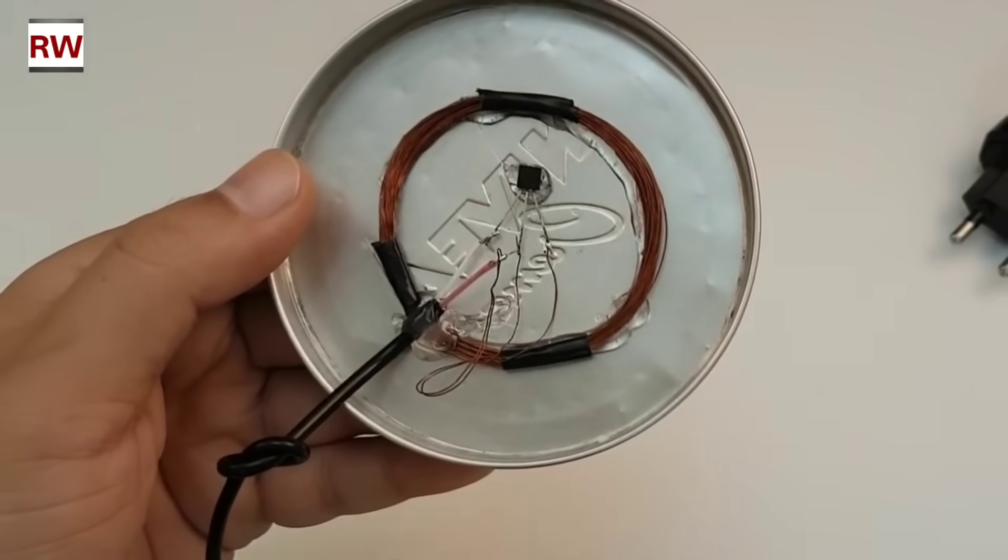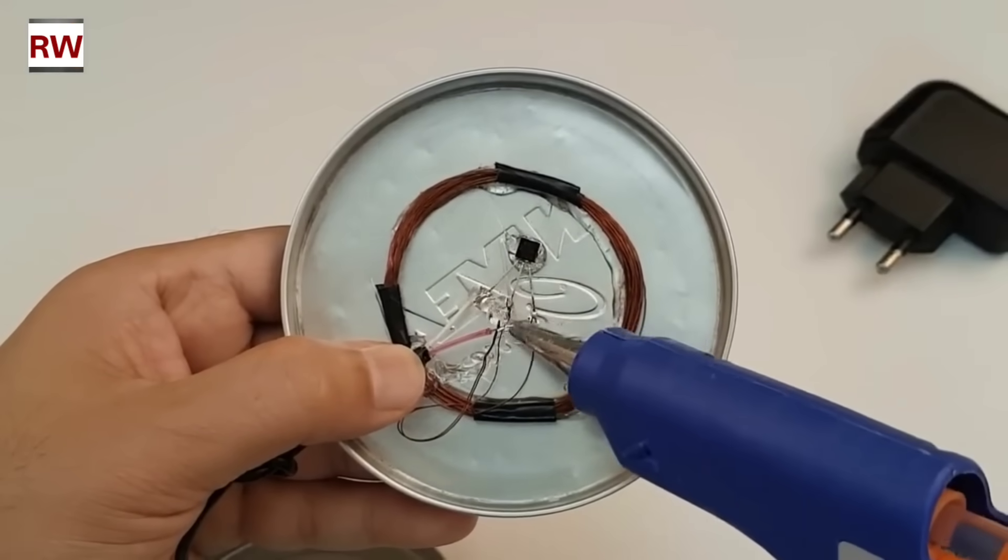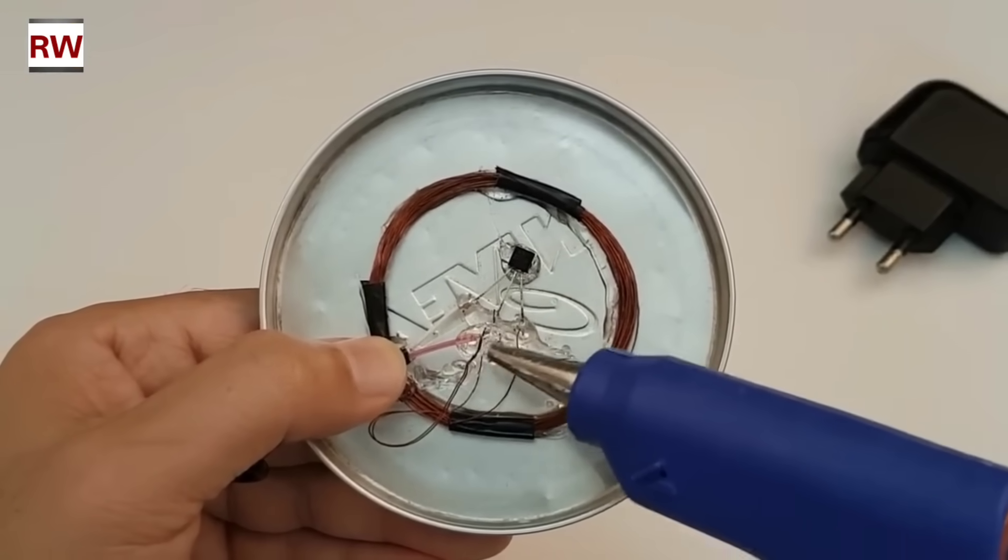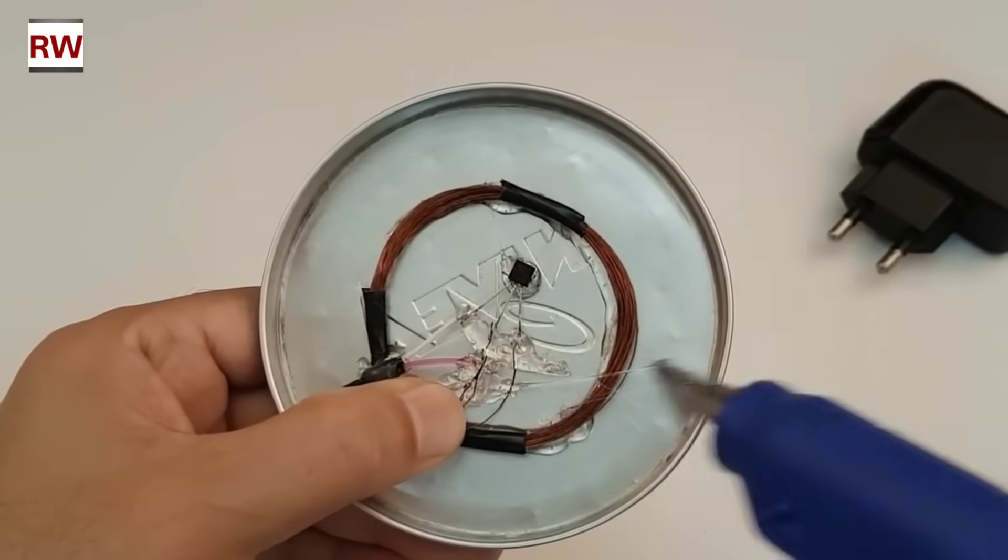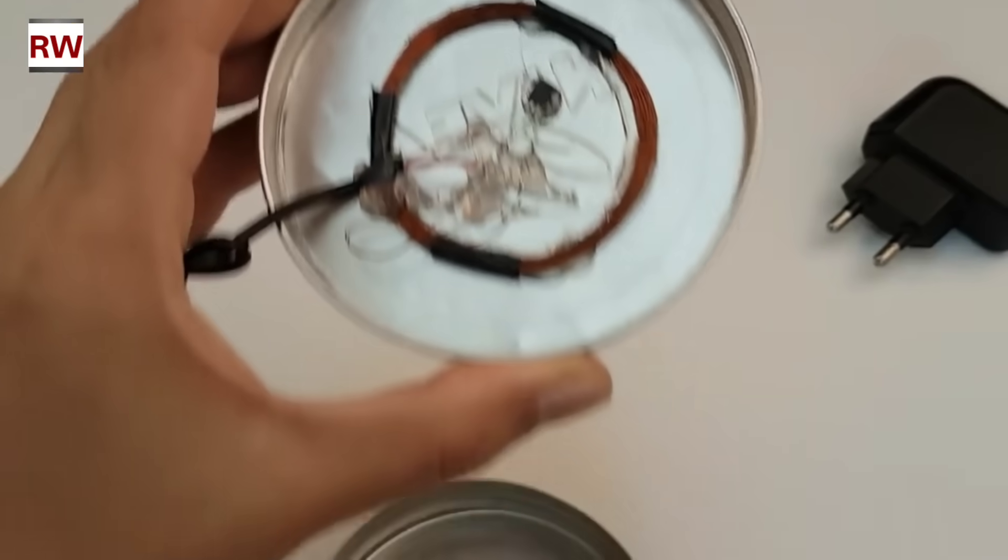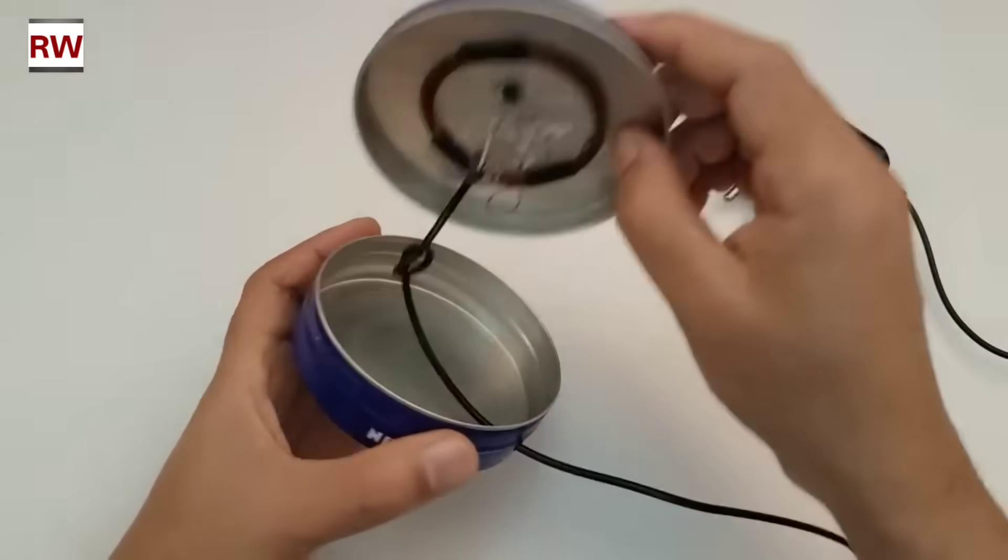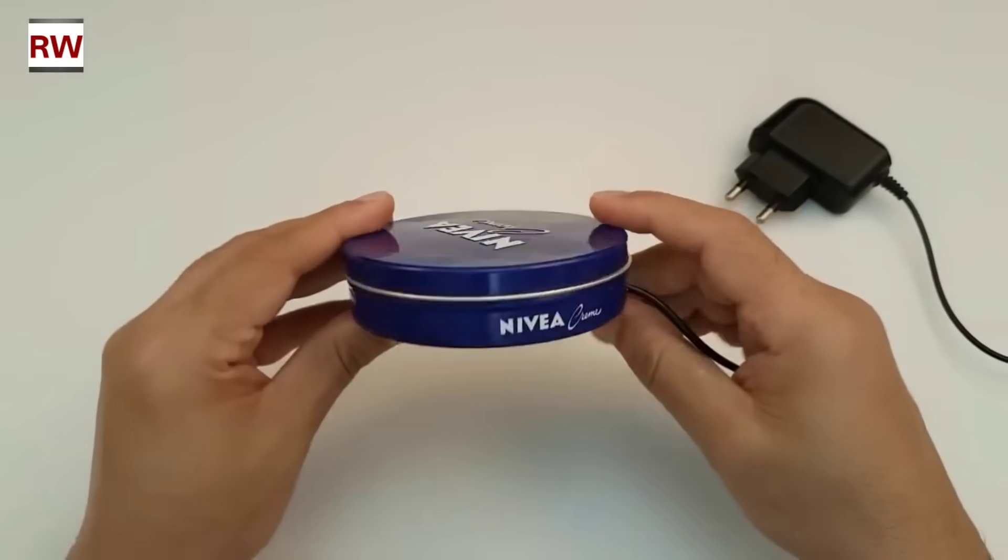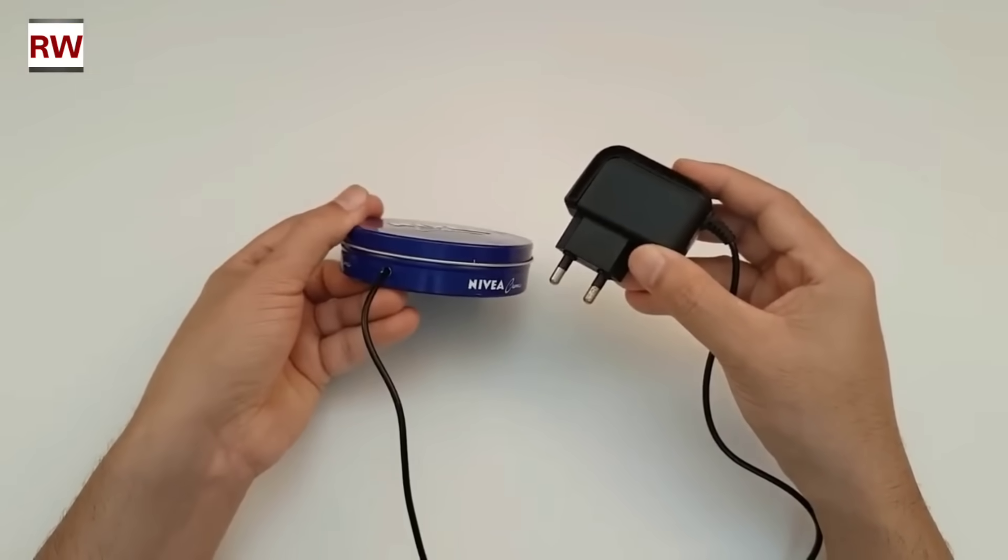At this stage, we are applying a generous amount of hot glue over the entire connection area. The reason for using so much glue is to make sure all the components, especially the wires, remain tightly fixed in place. We want to eliminate any chances of movement, loosening or short circuits that could occur during operation.